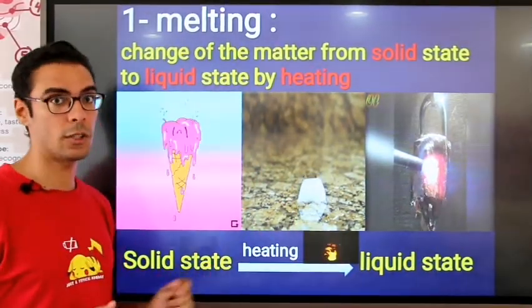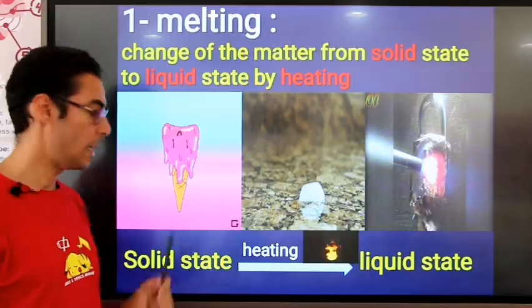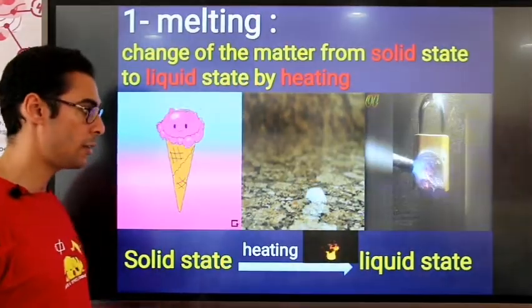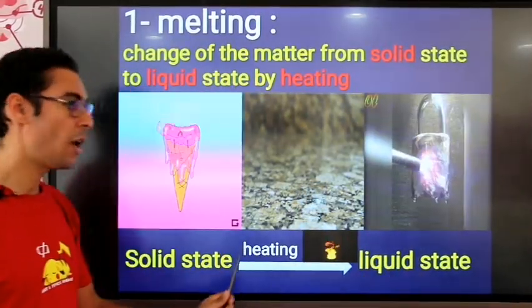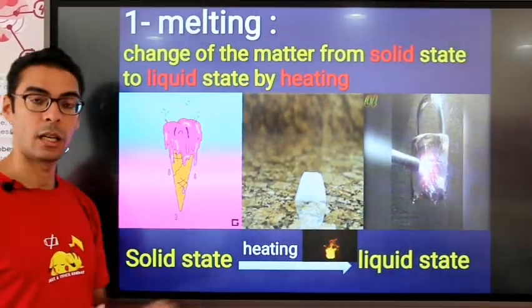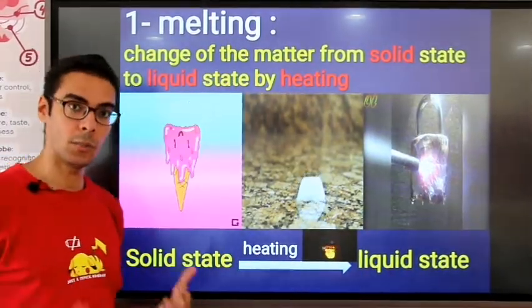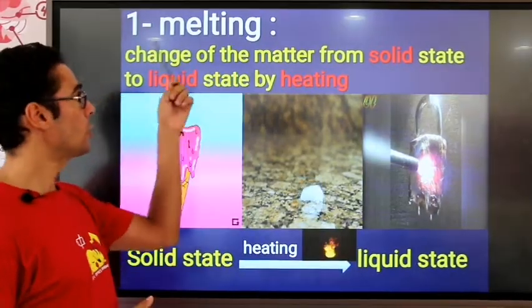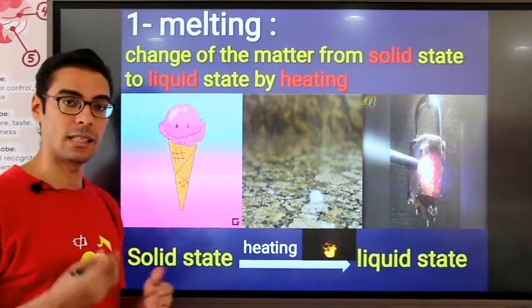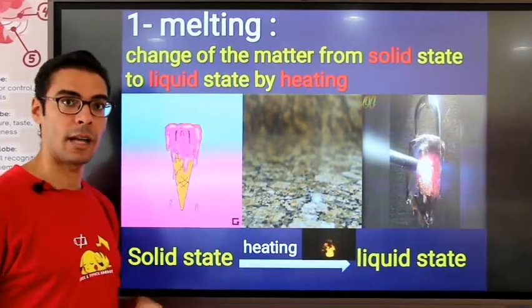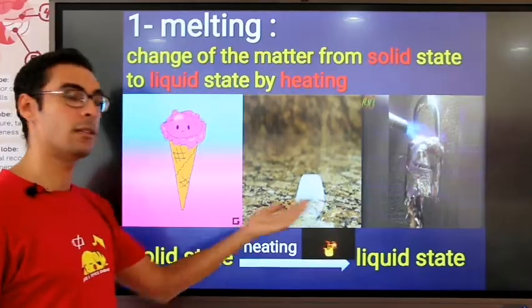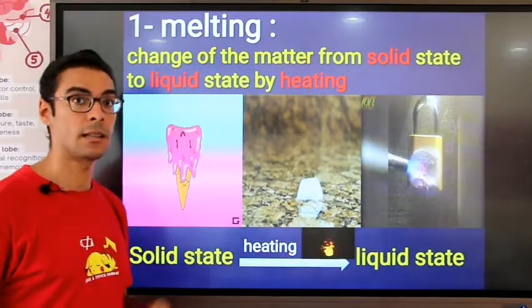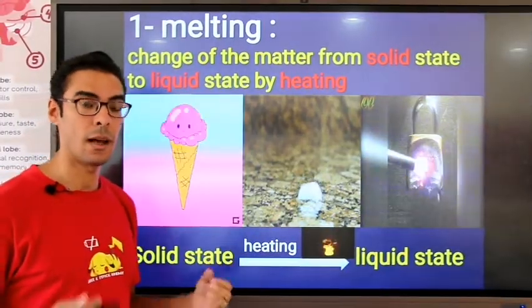So this is a general rule: any solid matter becomes liquid state by heating. We call this process melting. Melting is the change of matter from the solid state into liquid state by heating.